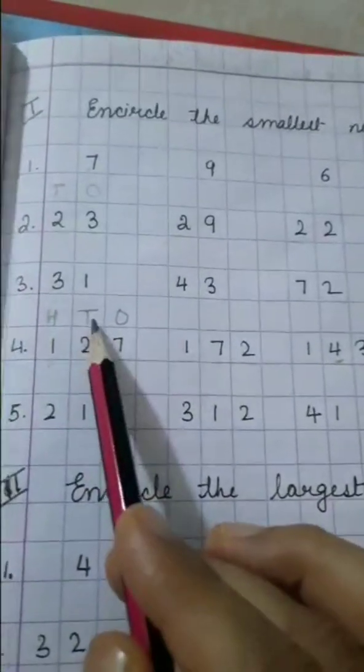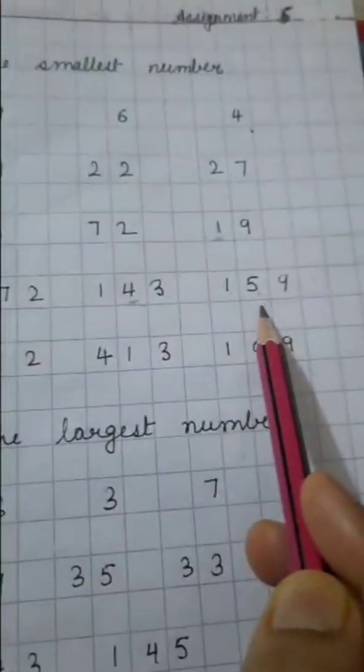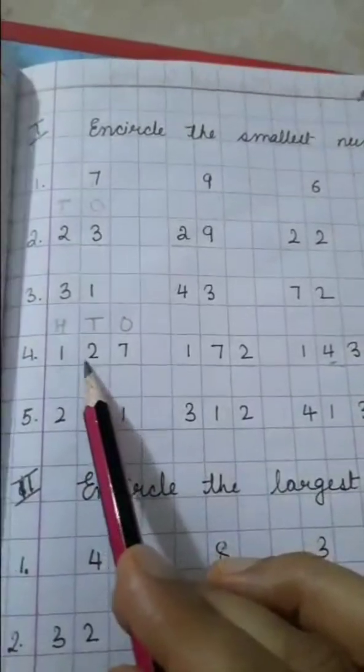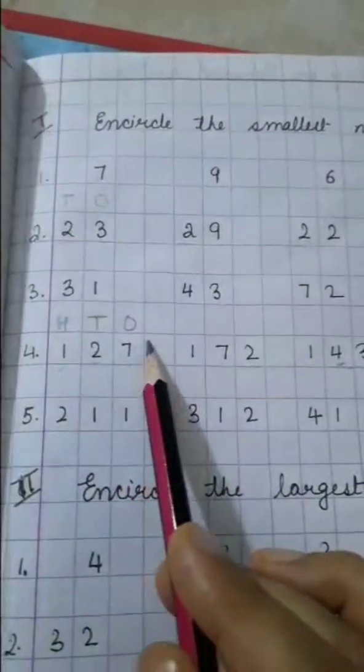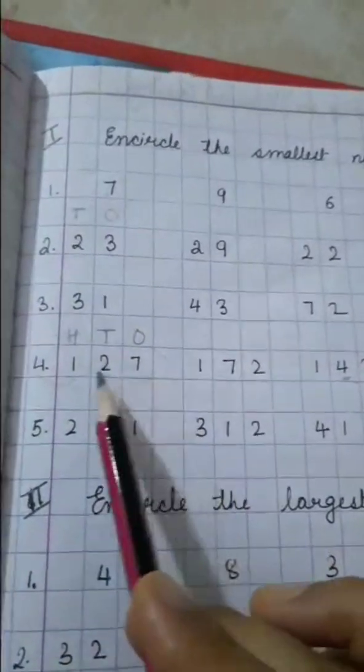Now the next digit under 10s is 2, 7, 4, 5. So which is the smallest over here? This is 2, okay? So we will encircle this digit, this number, sorry.